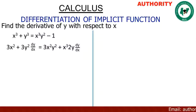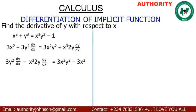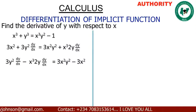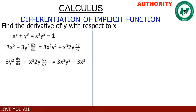From here, let's rearrange — collect the terms that have dy/dx on one side and the rest on the other side. We have 3y² dy/dx, and we take s³ · 2y dy/dx to the other side to get minus s³ · 2y dy/dx, equal to 3s²y² minus 3s².